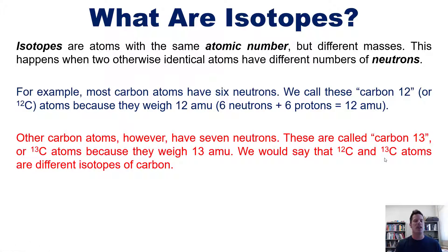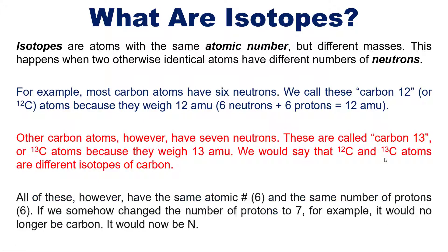We would say that C12 and C13 atoms are different isotopes of carbon. Same number of protons, different numbers of neutrons. Now all of these have the same atomic number, which is 6, and the same number of protons, which is also 6.